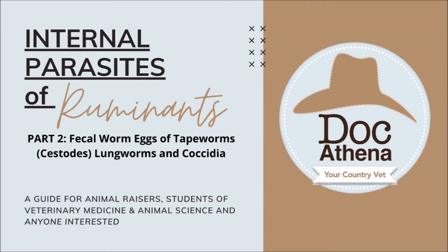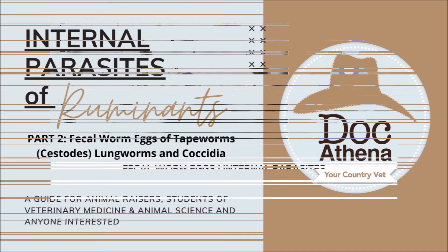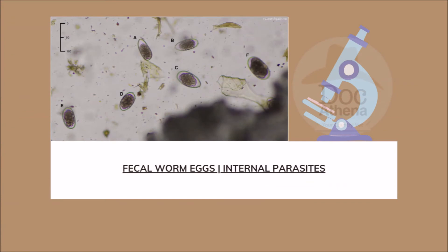Today we are going to discuss internal parasites of ruminants focusing on fecal egg worms. This is a guide for animal raisers, students of veterinary medicine and animal science, and basically anyone who is interested in this topic. Here is a photo from researchgate.net showing fecal eggs under the microscope. The fecal eggs presented in this photo are called strongyle type eggs.